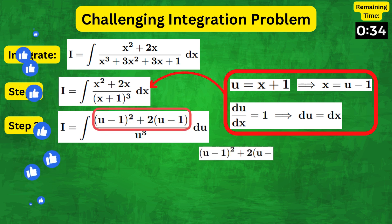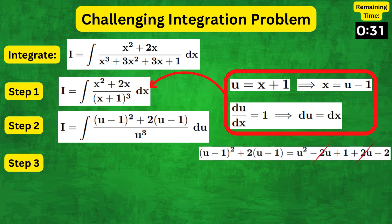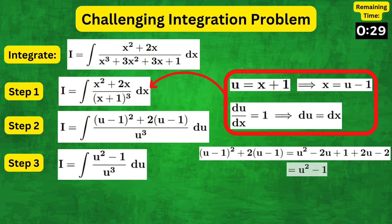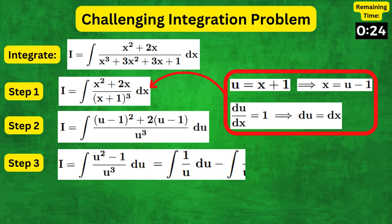Now we can expand the numerator and simplify to get u squared minus 1. Then, after splitting the fraction into 2, the integral becomes 1 over u minus 1 over u cubed du.